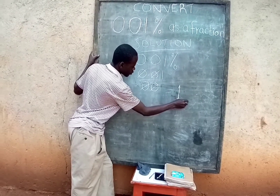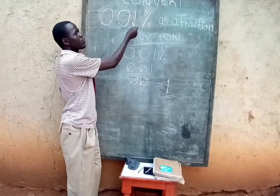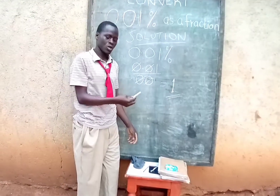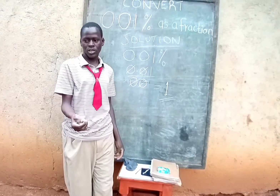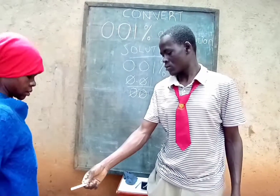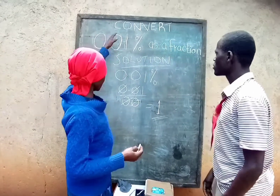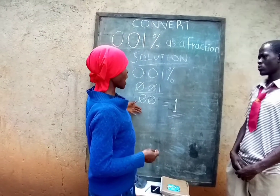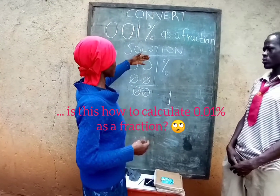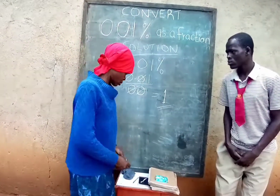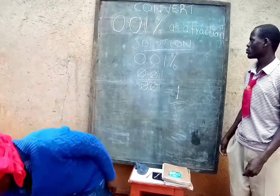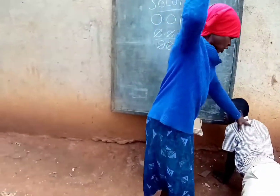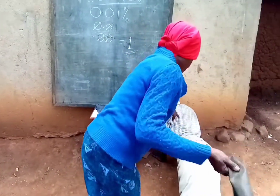So calculate 0.01% as a fraction — the final answer is one. The teacher responds: is this the way I taught you? Is this how to calculate 0.01% as a fraction? The student says yes. Madam, you are lying. I'm not going to allow this to happen — it is one. You student, lie down, you are cheating! Ha ha ha ha ha ha.